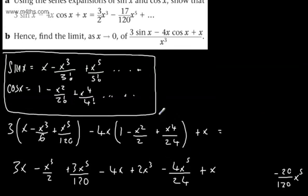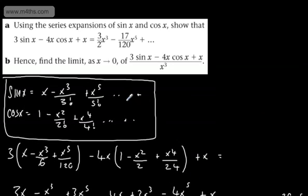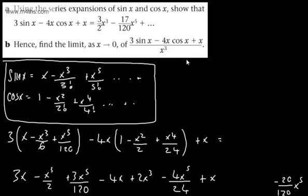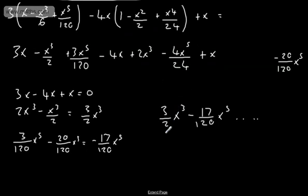The next part of the question, hence find the limit as x tends to 0 of 3 sine x minus 4x cos x plus x. Now, just consider, if we split all of this here by x cubed, you can see what we're going to be left with now is the following. The x cubed will cancel.